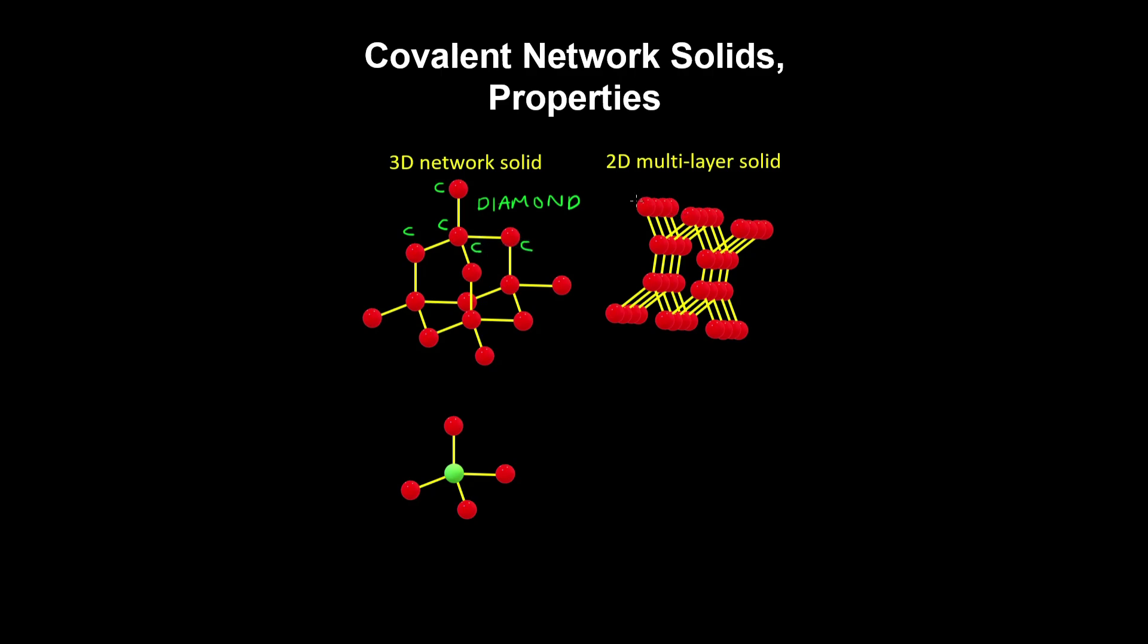Or the solids can be multilayered, such as with graphite, where each layer, being a sheet of graphene, consists of a bunch of covalently bonded carbon atoms, and then between the layers you have intermolecular forces, which are weak van der Waals forces.